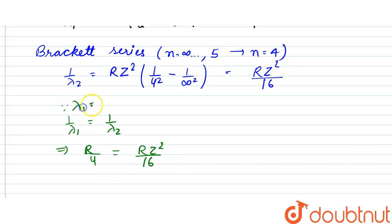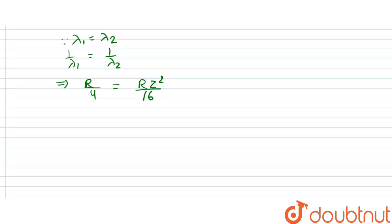Since lambda 1 is equal to lambda 2, that is why we have written this. So, from here, what we can say is that R gets cancelled. So, Z squared turns out to be equal to 16 by 4, which is equal to 4.